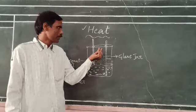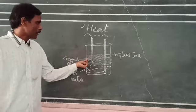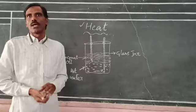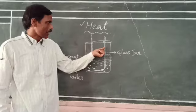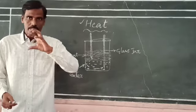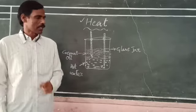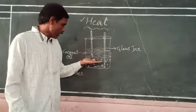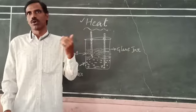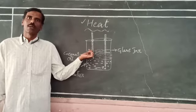Initially, the reading of the thermometer in the hot water is higher and the reading of the thermometer in the coconut oil is lower. After a while, the reading of the thermometer in the hot water decreases. At the same time, the reading of the thermometer in the coconut oil increases. This shows that heat energy is flowing from the hot water to the coconut oil, confirming that heat energy flows from a hotter body to a colder body.